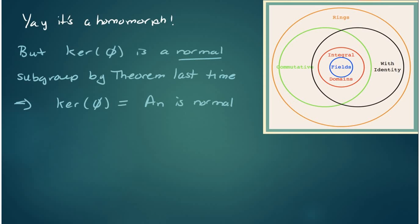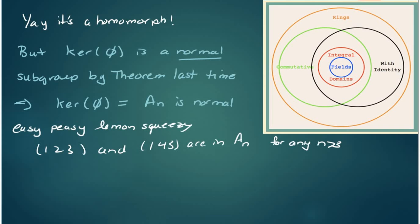So it's a homomorphism. But by the theorem I presented for you the other day, the kernel is automatically normal by the subgroup theorem last time. And the kernel of phi turns out to be A_N, which now we have as normal. So it's done.